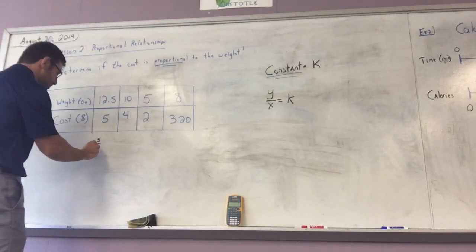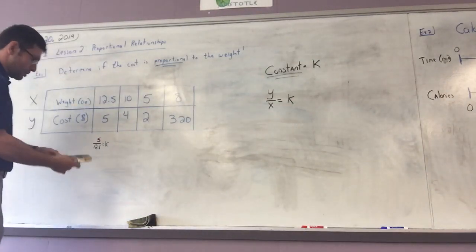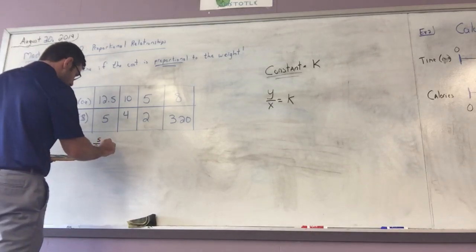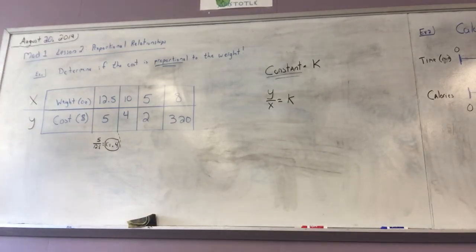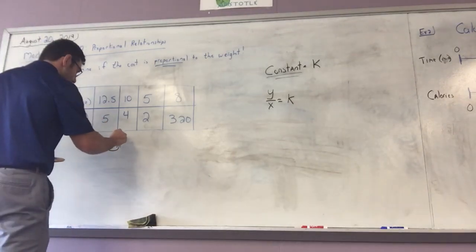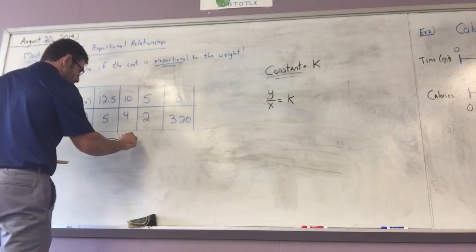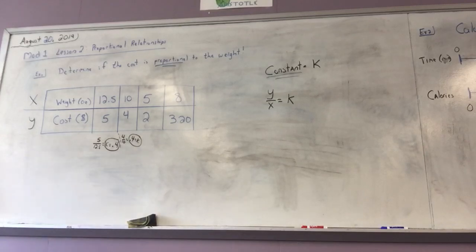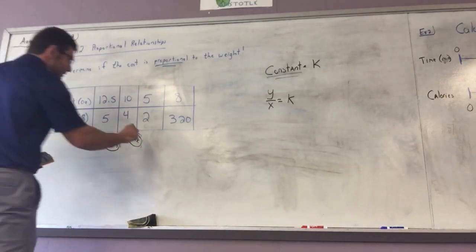So I do 5 divided by 12.5, and that gives me K. Using a calculator, 5 divided by 12.5 gives me 0.4. So my K for this situation is 0.4. Now I do 4 divided by 10 — I don't need a calculator for that, that is also 0.4. My K has stayed the same, so far it is constant.